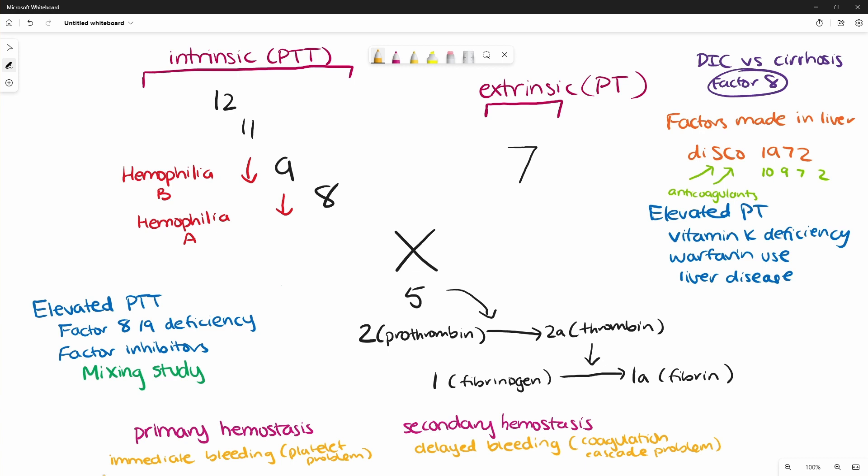You should know the differential for an isolated elevation in PT and a differential for an isolated elevation in PTT. And also you should know which factors are made in the liver and how to differentiate DIC versus cirrhosis. Thanks again for watching. I hope this was helpful and I'll see you in the next one.